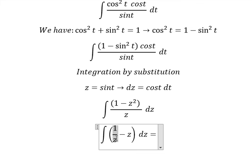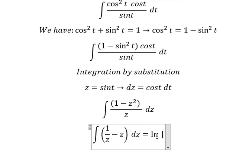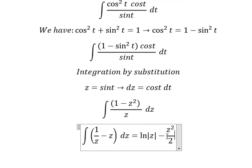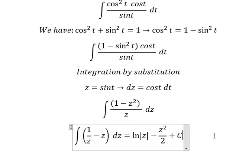The integration of 1 over z we have ln of the absolute value of z. The integration of z we have z squared over 2, and I will put c.